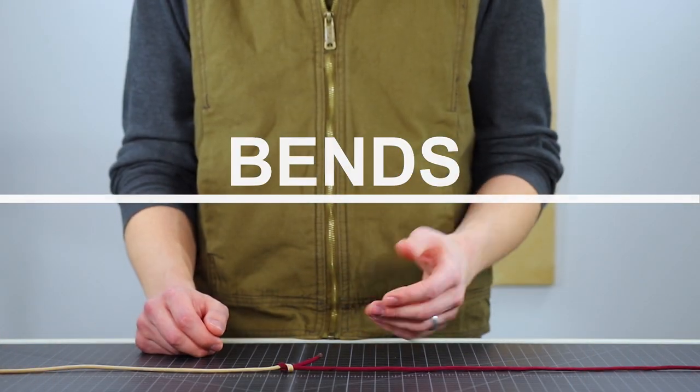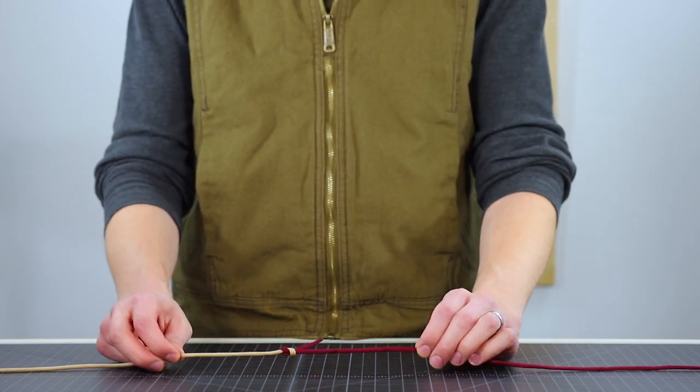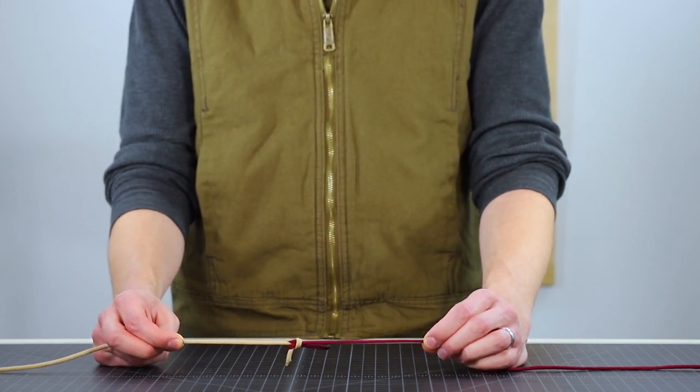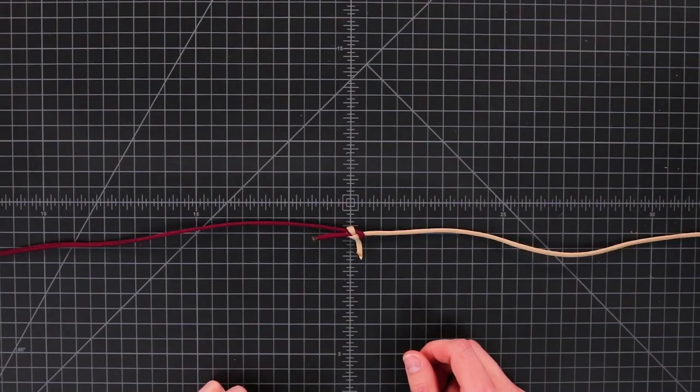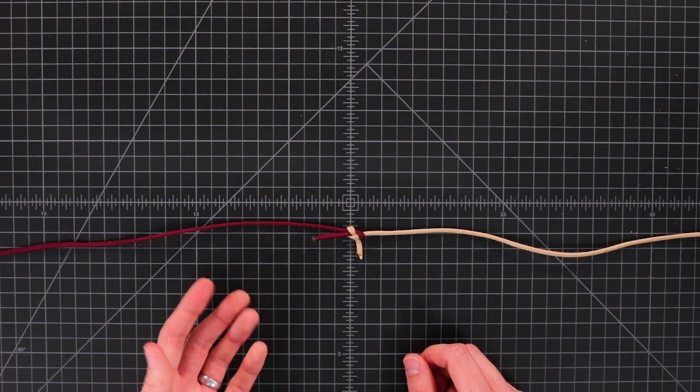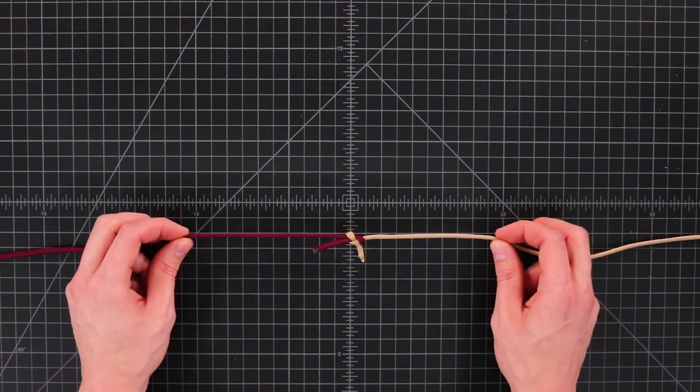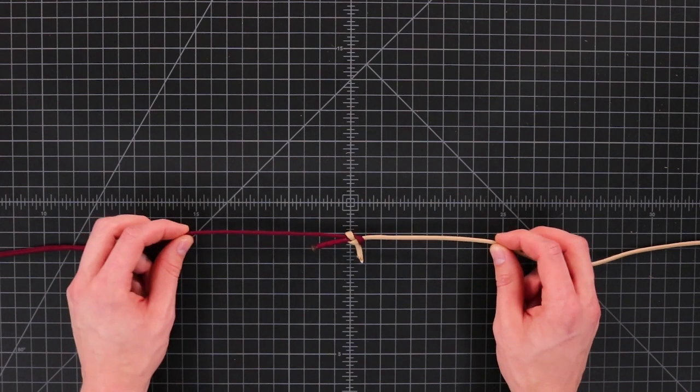The next category of knots is bends. A bend is tying two rope ends to each other. They are used anytime that you want to extend the length of a rope or sometimes make a closed loop in a rope by tying the ends of the same rope to itself.